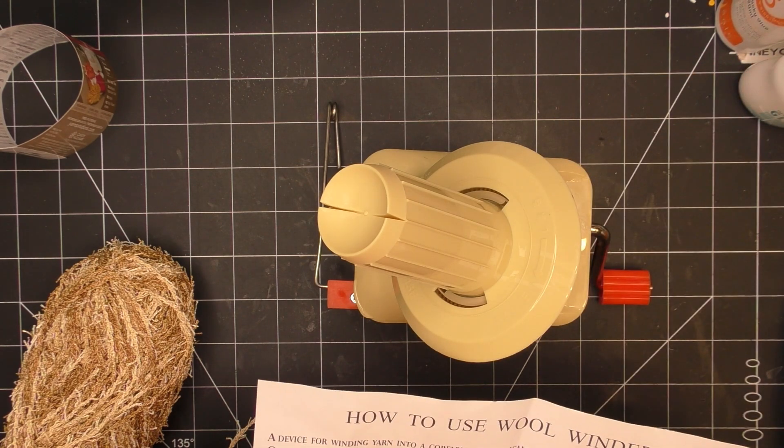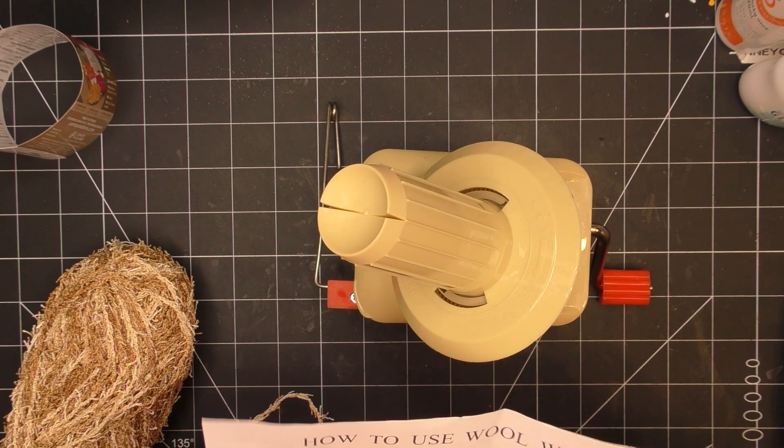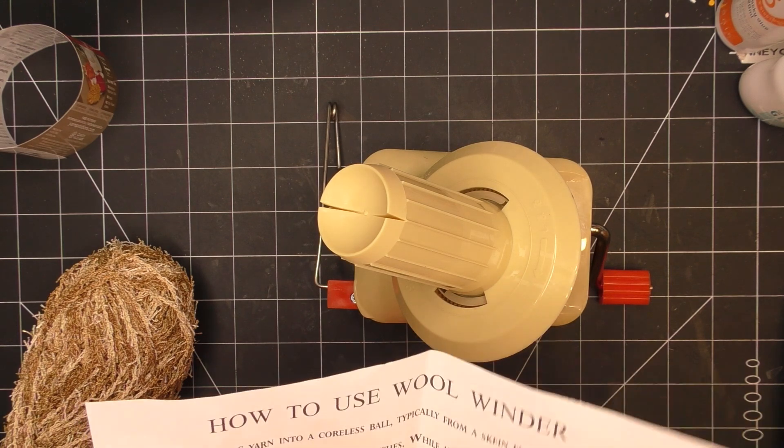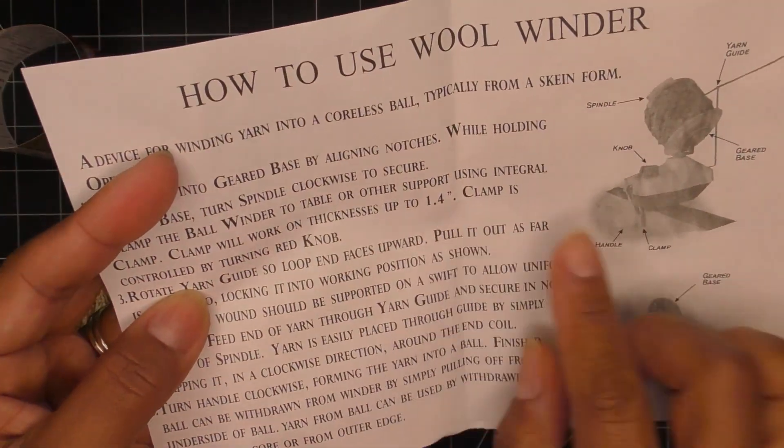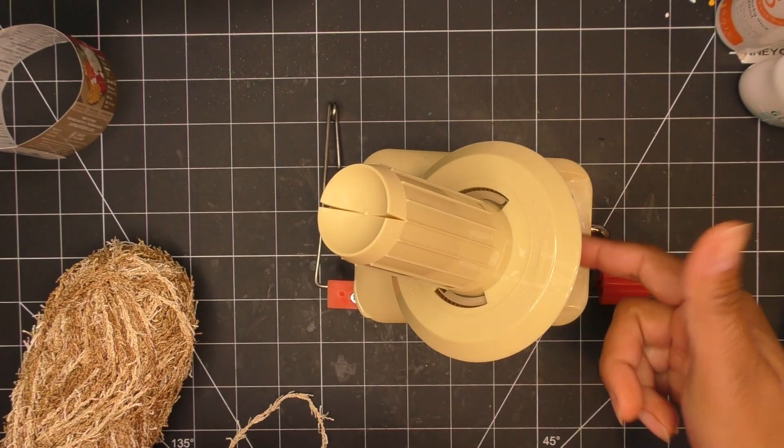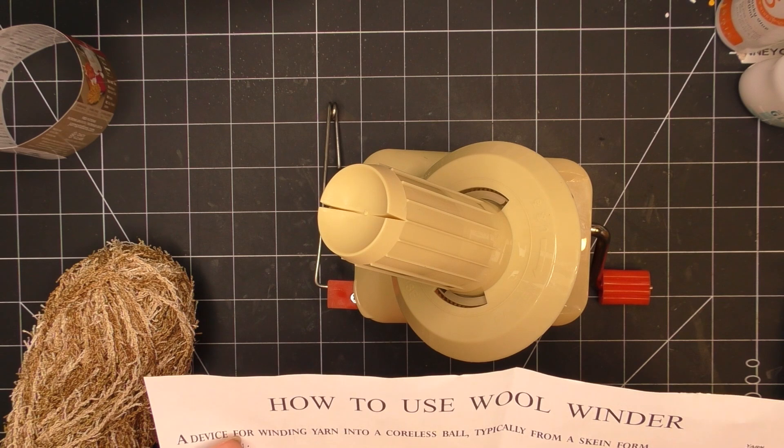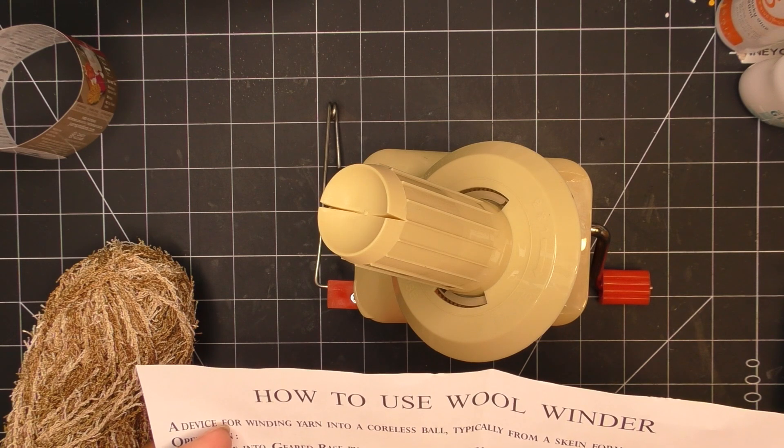Clamp the ball winder to a table or support, which I'm not going to do right now. Clamp will work on a thickness up to 1.4 inches. I said it's about one and a half, I was close. Clamp is controlled by turning the red knob. Rotate yarn guide so loop end faces upward. Pull it out as far as it will go, locking it into working position.